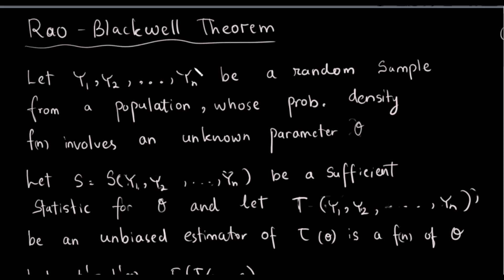In this video, we are talking about the Rao-Blackwell Theorem. We have a population of y1, y2, ..., yn as random samples. We have a population parameter theta, and this is the unknown parameter.